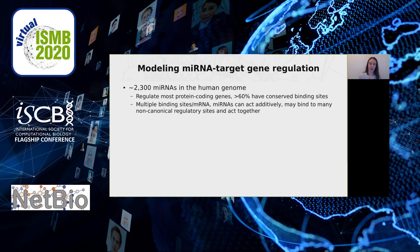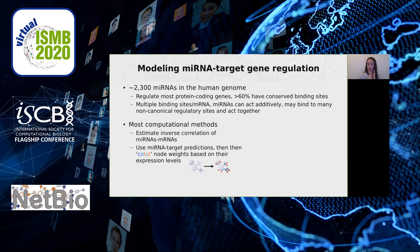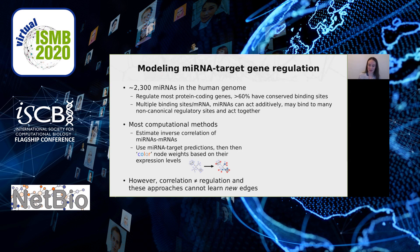There are over 2,000 microRNAs in the human genome, and these are thought to regulate most protein-coding genes — more than 60% of protein-coding genes have conserved binding sites for microRNAs. Each gene can have multiple binding sites, and microRNAs can act additively, binding to many non-canonical regulatory sites with lower affinities. They can also act together, resulting in a complex network of interacting elements. Most computational methods estimate inverse correlation between microRNA and mRNA expression levels. The difficulty is that correlation does not necessarily mean regulation, and these approaches cannot learn new edges — for example, if a target prediction algorithm does not predict a specific microRNA target, those edges cannot be learned.